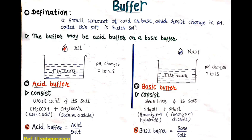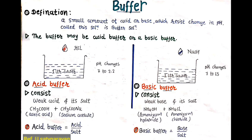Now we are talking about types of buffers. Mainly, buffers are classified into two types. First is acid buffer and second is basic buffer. Acid buffer consists of a weak acid and its salt combined to make a solution. Example is acetate buffer — acetic acid CH3COOH acts as the weak acid and sodium acetate CH3COONa acts as its salt. In an acid buffer, the acid and its salt combine to prepare the acid buffer solution.